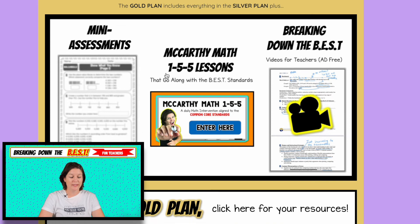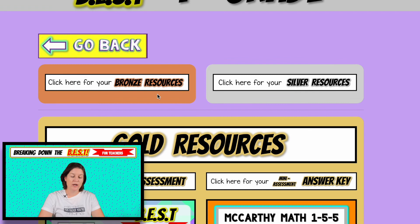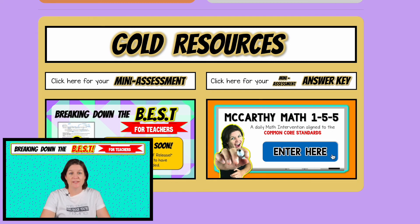And then for your, if you have the gold plan, you have access to a little bit more. You have access to the bronze, the silver, that everything that we just have gone over so far. You have this ad-free version of the Breaking Down the BEST for Teachers videos. They are available in other social media platforms. However, I'm just posting it there, but really the main difference with the gold and the silver is that you receive a mini assessment. So many video lessons from the previous McCarthy Math 155 that is aligned to the Common Core Standards, but there are some videos for extra practice. There are a lot of skills that trickle over. So if you're looking for like so many videos, then you want to go with this plan.